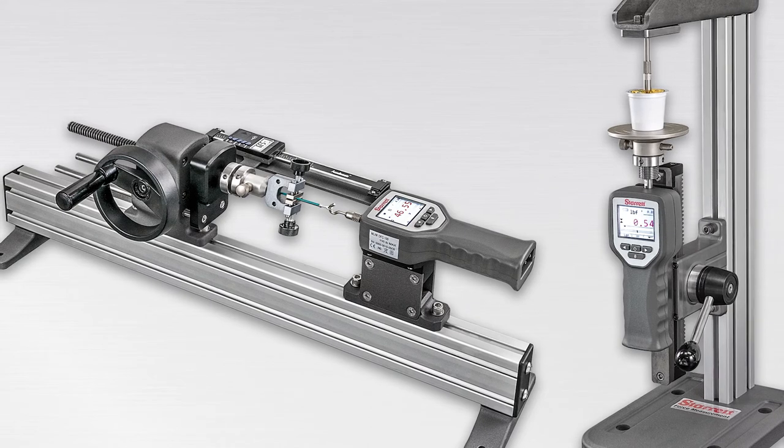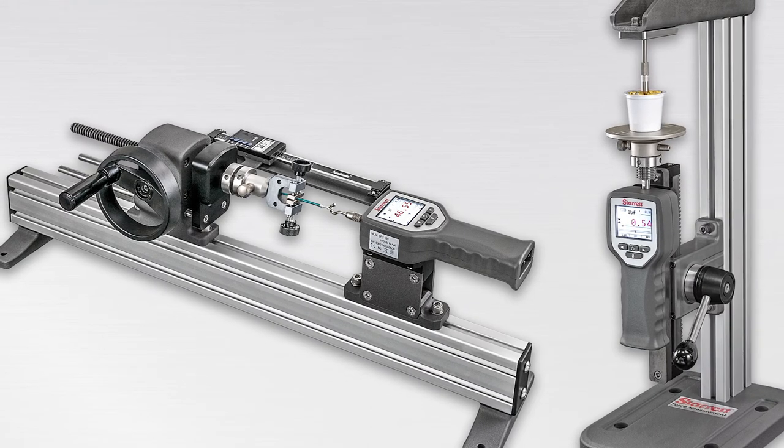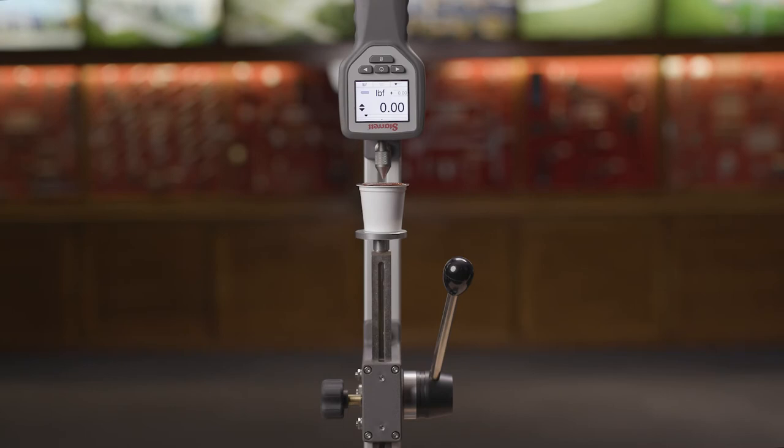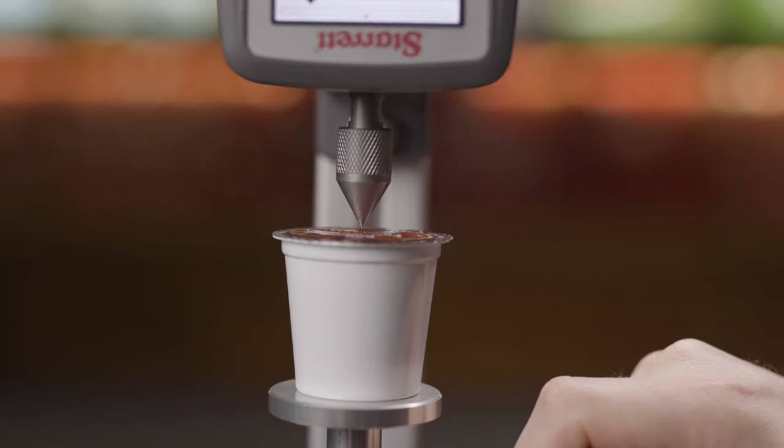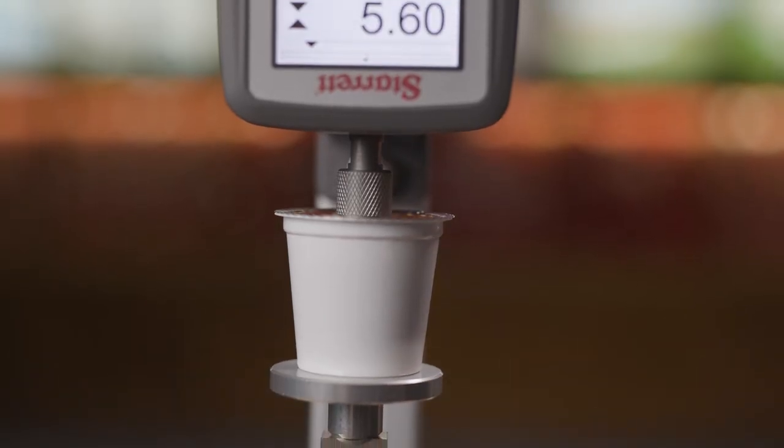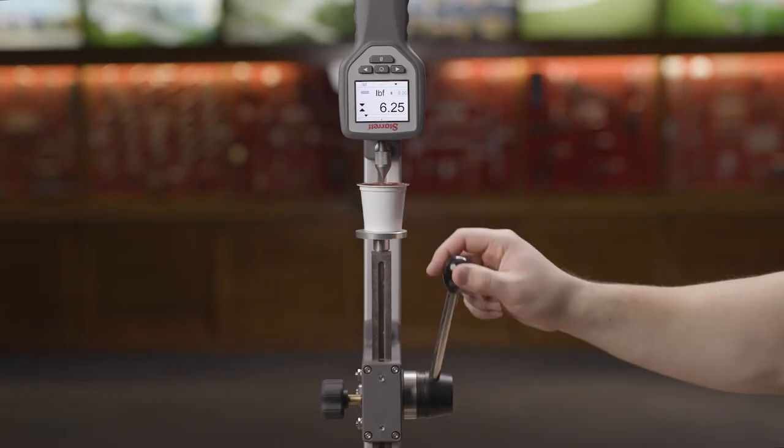They are particularly useful where low volume or occasional testing is required. The MTL tester is operated with a quick action lever that moves the rack and pinion crosshead three inches per revolution.